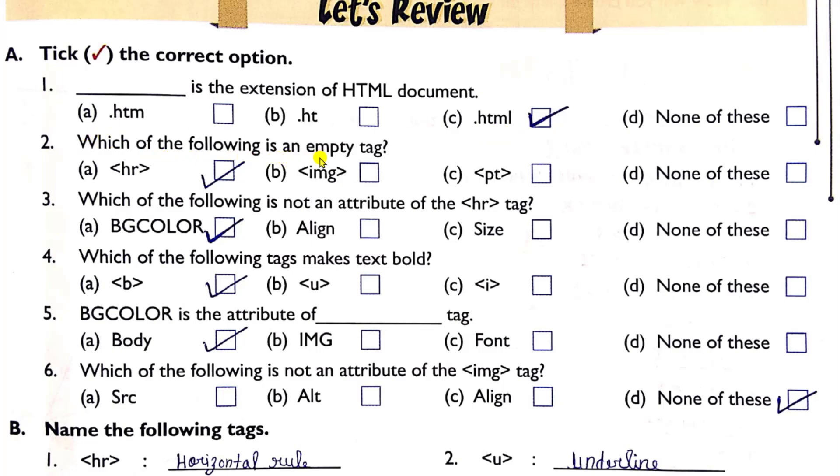Second one is which of the following is an empty tag? Answer is HR tag. Third, which of the following is not an attribute of the HR tag? Answer is bgcolor, background color. Fourth, which of the following tags makes text bold? Answer is B tag or you can say bold tag.